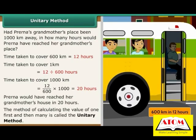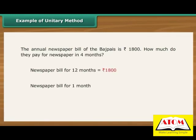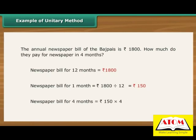The method of calculating the value of 1 first and then many is called the unitary method. Example: The annual newspaper bill of a family is Rs. 1800. The bill for 12 months is Rs. 1800, so the bill for 1 month is Rs. 1800 by 12, that is Rs. 150. Therefore, the newspaper bill for 4 months is Rs. 150 into 4, equal to Rs. 600.